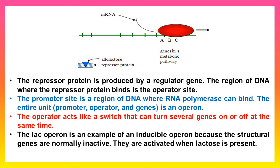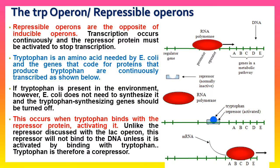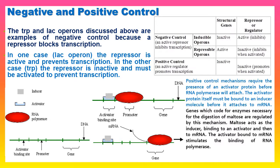The trp operon, also called a repressible operon, is responsible for the amino acid tryptophan. A repressible operon is the opposite of an inducible operon: transcription occurs continuously and the repressor protein must be activated to stop transcription. Tryptophan is an amino acid needed by bacteria, and the genes that code for proteins that produce tryptophan are continuously transcribed. If tryptophan is present in the environment, the cell does not need to synthesize it, so tryptophan synthesis should be turned off. This occurs when tryptophan binds with the repressor protein, activating it. Unlike the lac repressor, this repressor will not bind to the DNA unless activated by binding with tryptophan. Tryptophan is therefore a co-repressor.